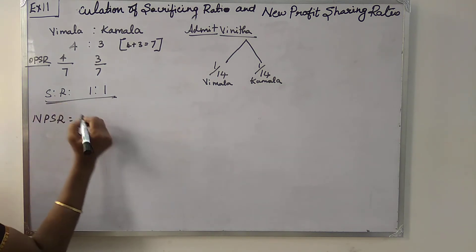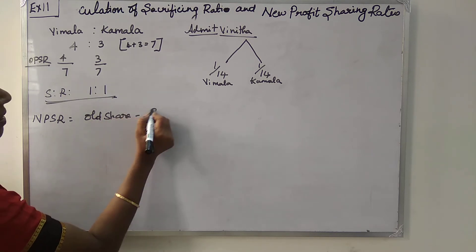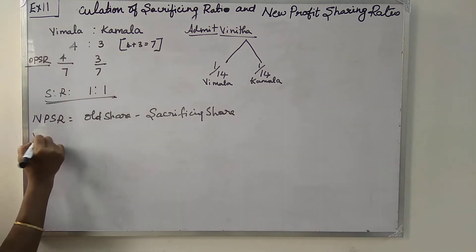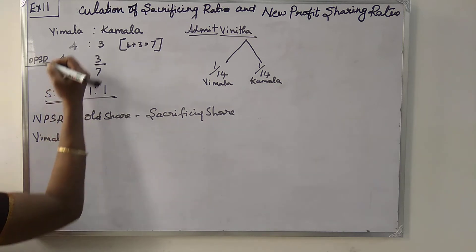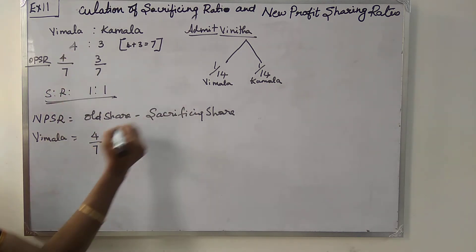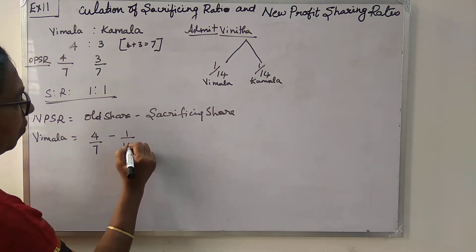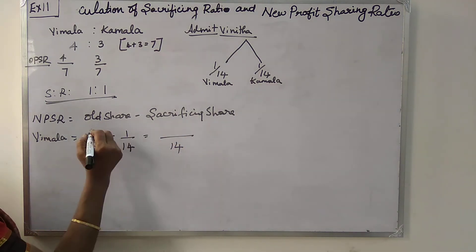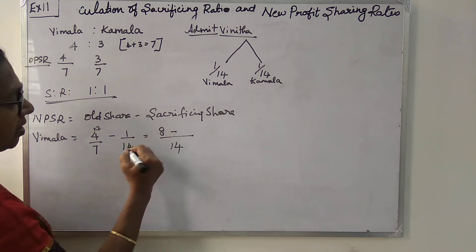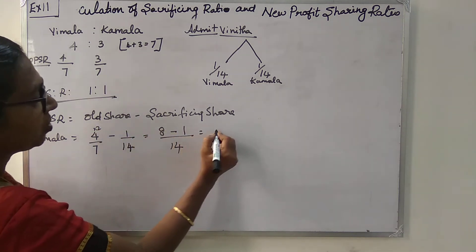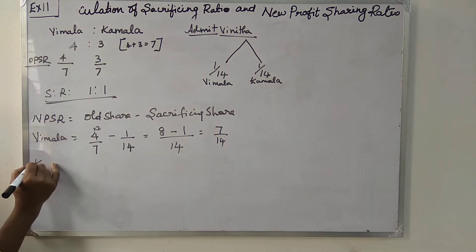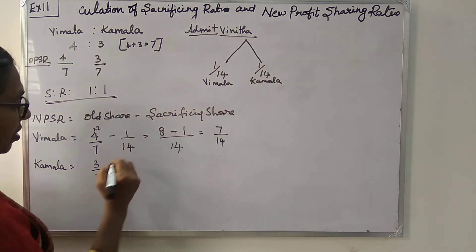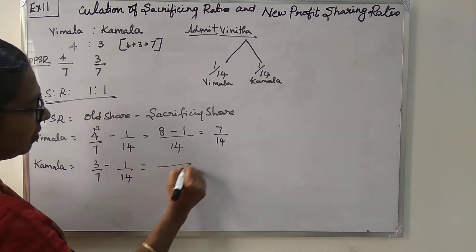The new profit sharing ratio equals old share minus sacrificing share. Old share of Vimala is 4/7, and we subtract 1/14. The denominator is 14; 7 goes into 14 two times, so 4 twos are 8, minus 1 gives 7/14. For Kamala: 3/7 minus 1/14 — 14 goes into 14 once, so 3 twos are 6, minus 1 gives 5/14.